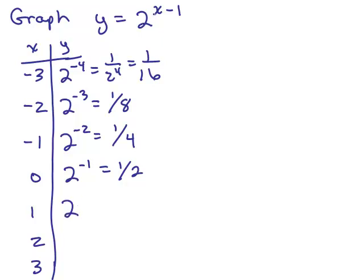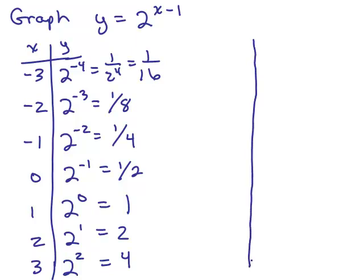Now, when I put in 1 for x, I get 2 to the 0, 2 to the 0 power is 1. When I put in 2 for x, I get 2 to the 1st, which is 2. And when I put in 3 for x, I get 2 squared, which is 4. So, there are a few ordered pairs, and then we simply graph those.